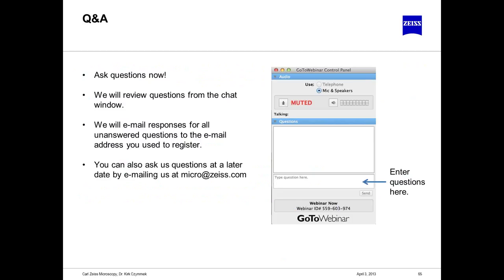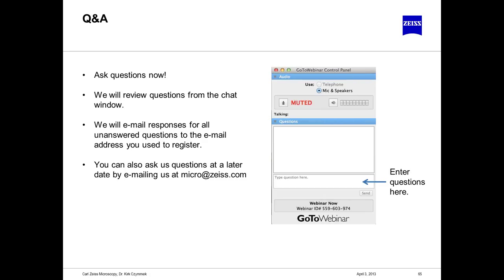Now we have time to answer some questions. The first question: what is the registration accuracy using Shuttle and Find between light microscopy and SEM? The Shuttle and Find product is guaranteed to be better than 25 microns accuracy. In practice, it's often much better — often within just a couple microns. Occasionally, due to factors such as sample shifting or slight stage adjustments, it can be about a field of view away at high magnification. So 25 microns is the worst-case scenario, typically maybe 50 microns, but it is generally quite accurate.